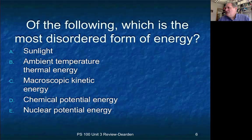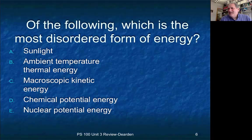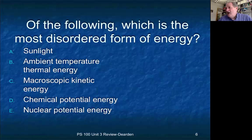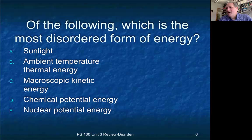This question asks you to rank various kinds of energy by how disordered they are. The most important one to know is that ambient temperature thermal energy is always the most disordered, because the energy is completely scrambled and randomly organized. Ordered forms of energy involve large objects moving together, so macroscopic kinetic energy is very ordered, whereas ambient temperature thermal energy is very disordered.